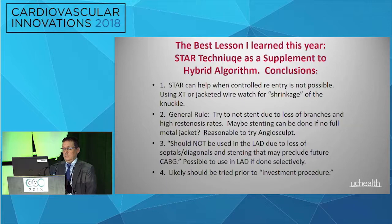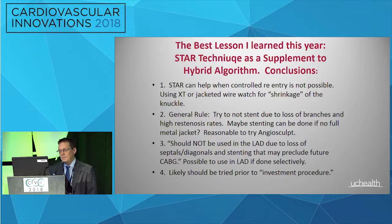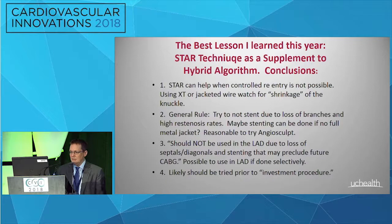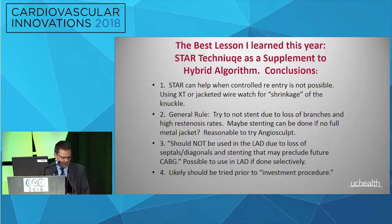The STAR technique, when a controlled reentry is not possible, can be helpful. It's important to watch for the shrinkage of the knuckle tip of the wire. Generally, try not to stent due to loss of branches and high restenosis rate, but maybe it can be done while avoiding a full metal jacket. You could try angiosculpt; try not to use it in the LAD. But before an investiture procedure gets done, this is a reasonable step.